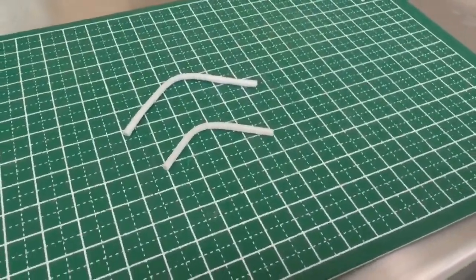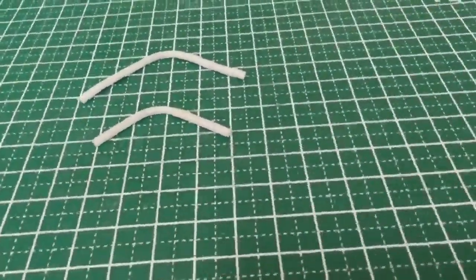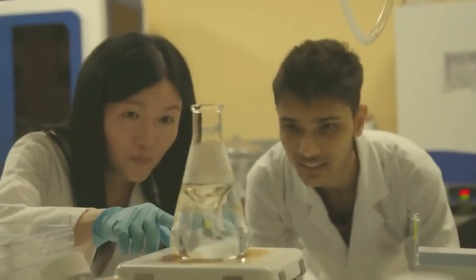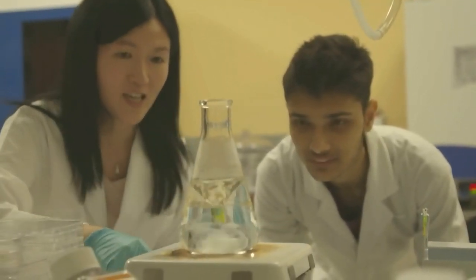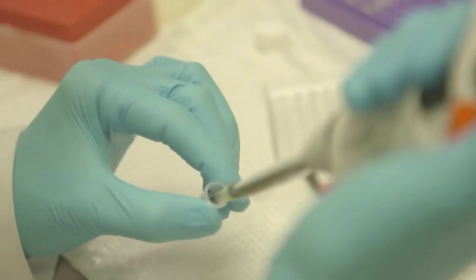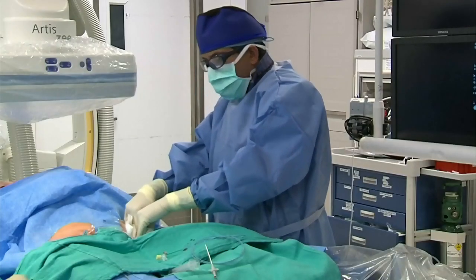They look like the plastic bendy straws you used to get in hospitals, but these are artificial blood vessels. Professor Evelyn Yim and her team at Waterloo University have been taking a molecule found in brown seaweed and using it to improve the function of tiny synthetic vascular grafts often implanted after a heart bypass.